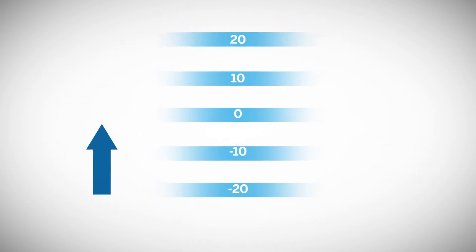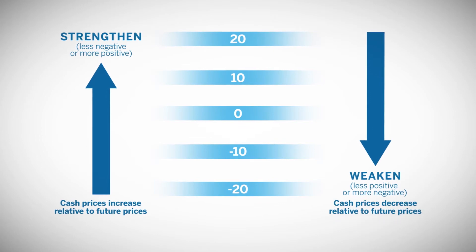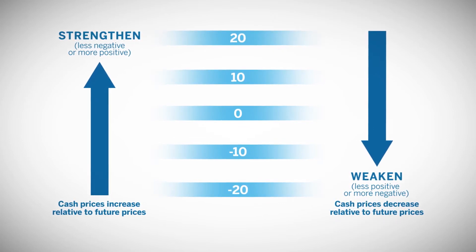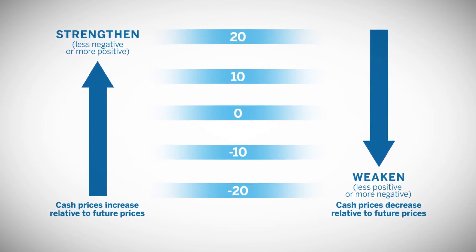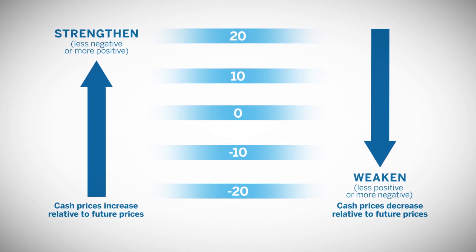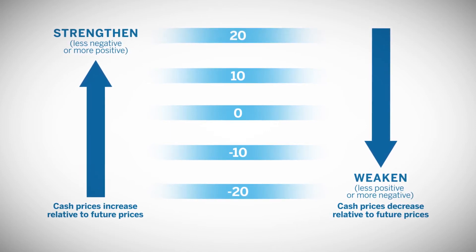One of the key considerations in understanding the basis is its potential to strengthen or weaken when cash prices increase or decrease relative to the futures prices. The more positive or less negative the basis becomes, the stronger it is. In contrast, the more negative or less positive the basis becomes, the weaker it is.